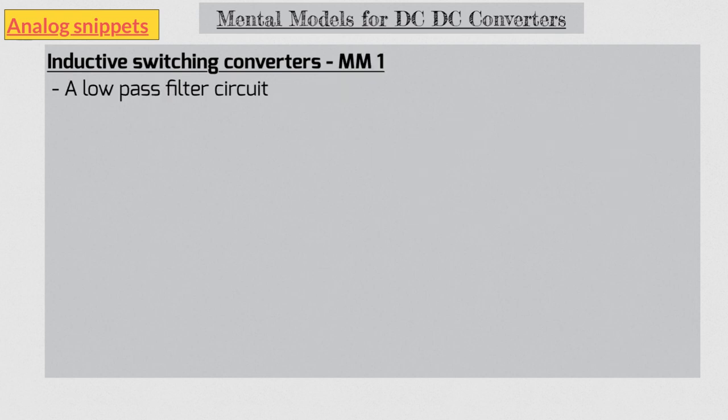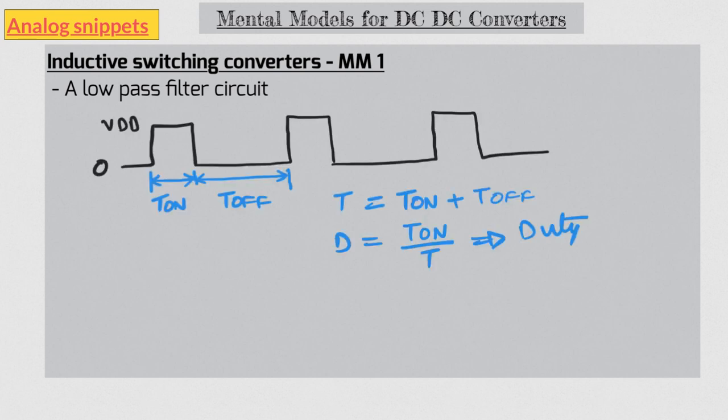Let's consider a pulse train switching between zero and a supply. Let's also assume that this pulse train has a constant duty. What is the average voltage of this pulse train? The average voltage here is easy to calculate. It's simply high voltage multiplied by T on time divided by total period. And this second factor you will recognize is simply your duty. So that was simple enough.